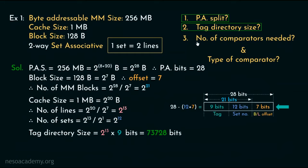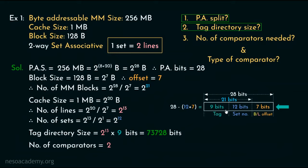Now let's find out the number of comparators needed and the type of comparator. Since we are dealing with a 2-way set associative cache, every set has 2 lines, so we will be needing only 2 comparators for the entire cache. The size of the tag field is 9 bits long, therefore the type of comparator is 9-bit. So 2 nine-bit comparators will be needed.